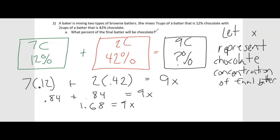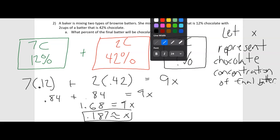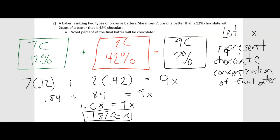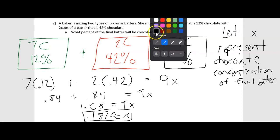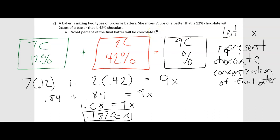If I divide both sides by 9, that is going to give me approximately 0.187. We want the percent, so we convert that to a percent by multiplying by 100 — moving the decimal place two to the right — so we get approximately 18.7%. Our final brownie batter is 18.7% chocolate.